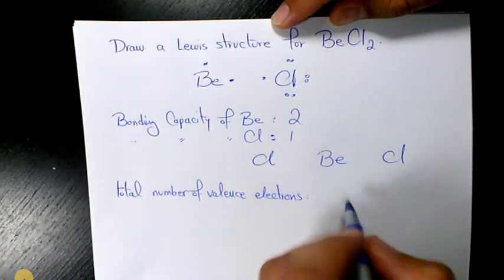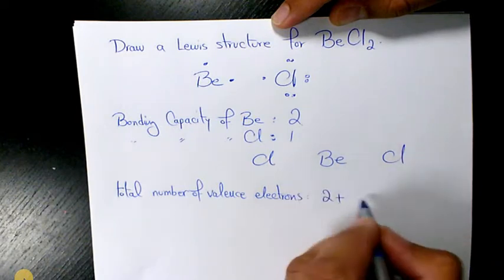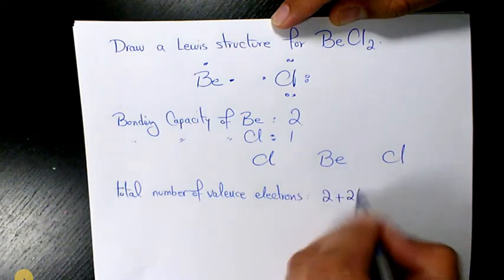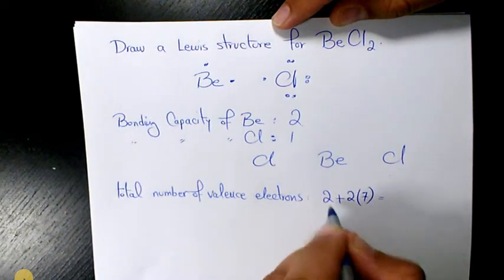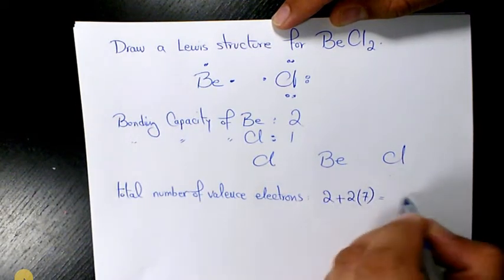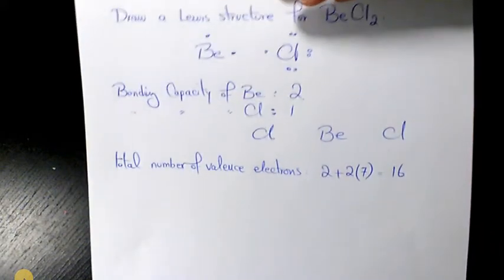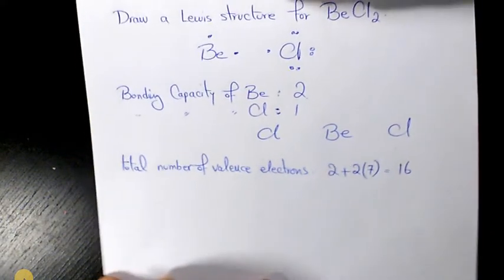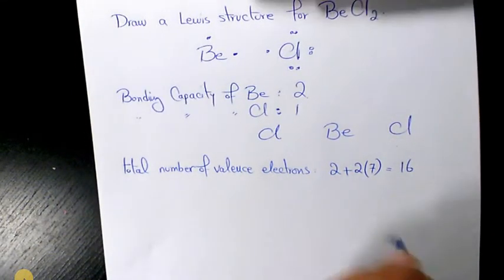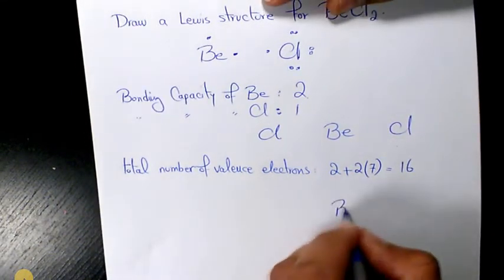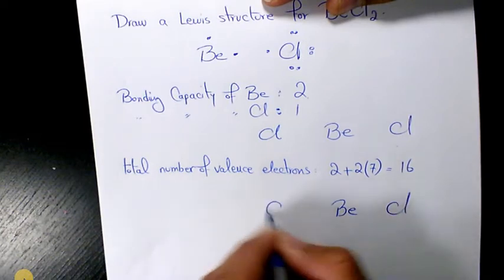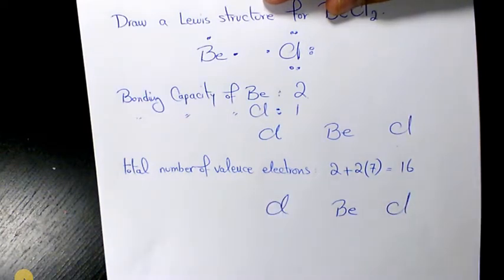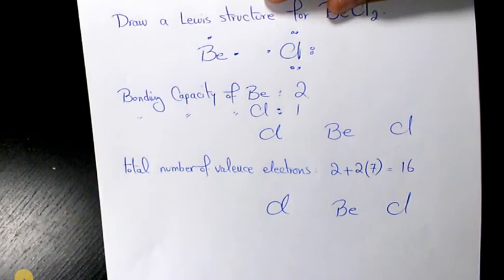Beryllium contributes two electrons, and we have two atoms of chlorine — two times seven — so it's going to be 2 + 14 = 16 total valence electrons. Now the first thing I'm going to do is place one pair of electrons between each adjacent pair of atoms.